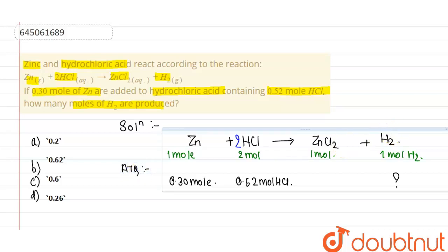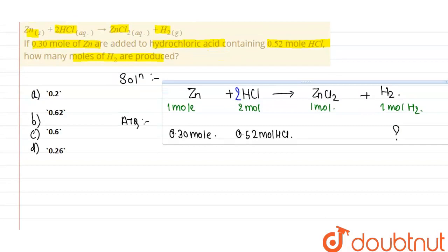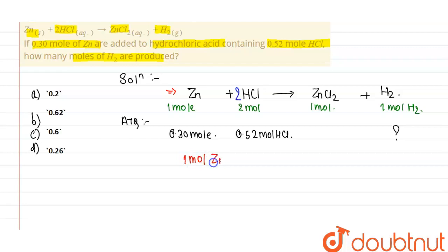If 0.30 moles of Zn is given, from the equation we know that 1 mole of Zn will react with 2 moles of HCl. So 0.30 moles of Zn will react with 0.60 moles of HCl.